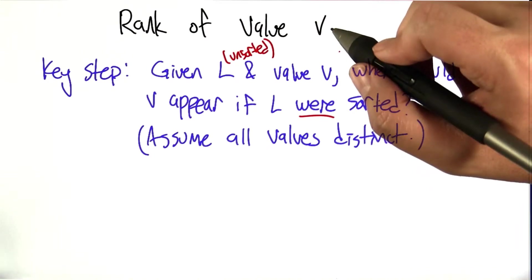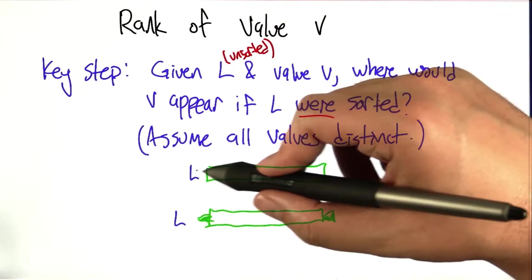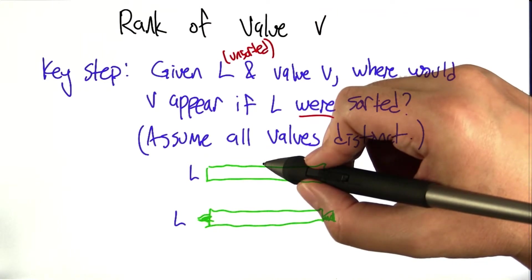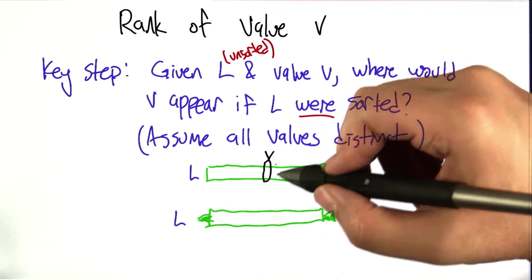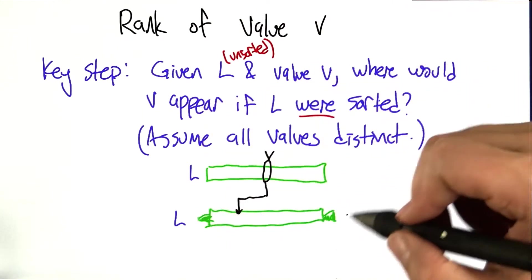Now just to, for the simplicity of the discussion for now, let's assume that all the values in the list are distinct. So we're imagining here we've got our list L, and we pick out some value V. It doesn't actually have to be in the list, but let's say it's in the list. And what we want to know is where would V appear in L if L were sorted, say smallest to largest.